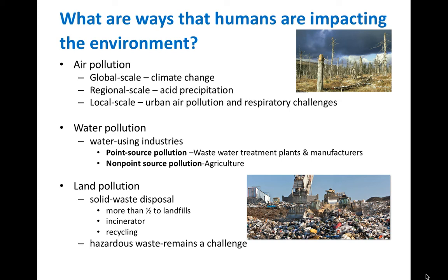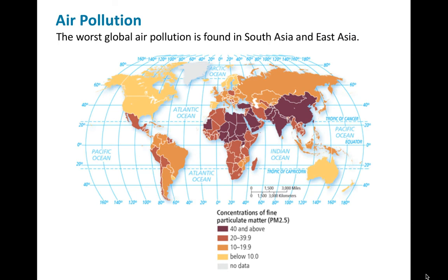Water pollution has two different types: point source pollution and non-point source pollution. Point source is wastewater coming from specific places like manufacturers and factories going right into our water systems. Non-point source includes things like agricultural runoff — herbicides and pesticides running off fields into rivers, streams, and lakes. Land pollution involves solid waste disposal — more than half of our garbage goes to landfills, some to incinerators, and some to recycling. You can see where air pollution is worst around the world — a lot in South Asia, Southeast Asia, East Asia, and across northern and central Africa.